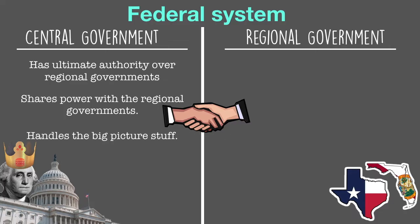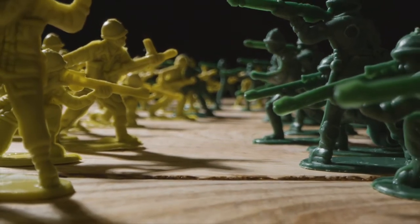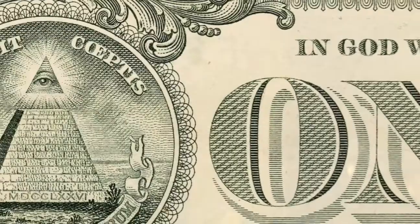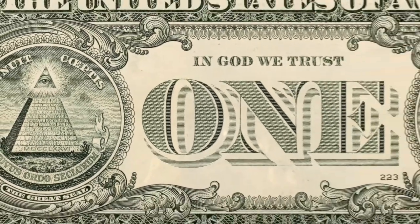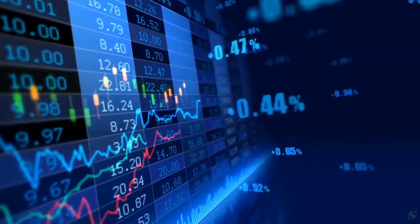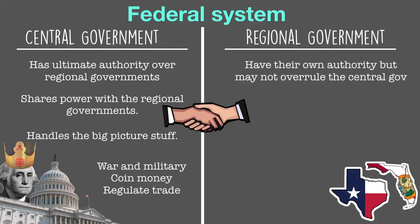The central government will handle the big picture stuff like declaring war on other countries and using the military, printing and designing money that we use in the country, and regulating which countries we trade with. Everything else is essentially left up to the regions or the states. This is the federal system.